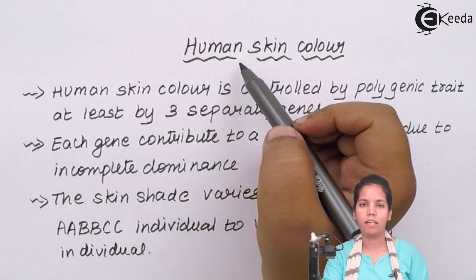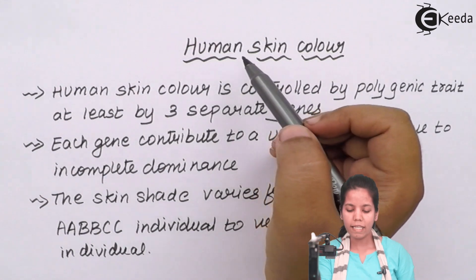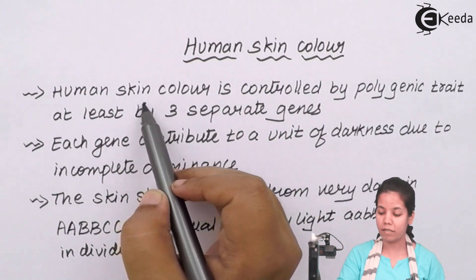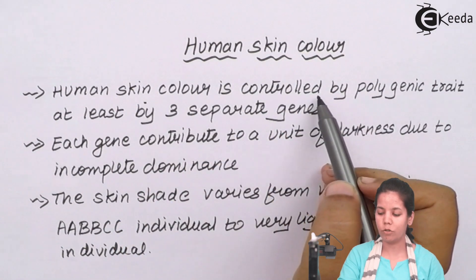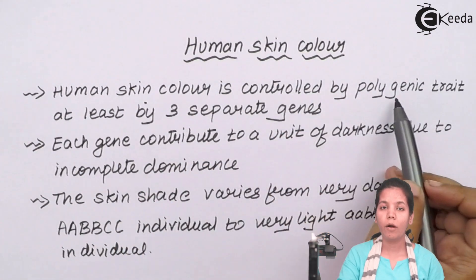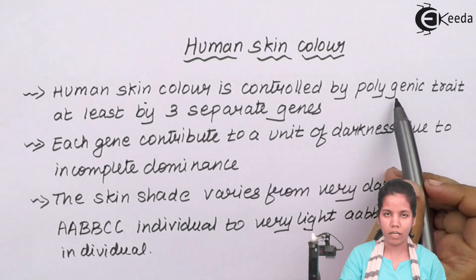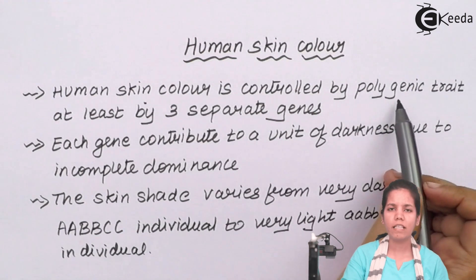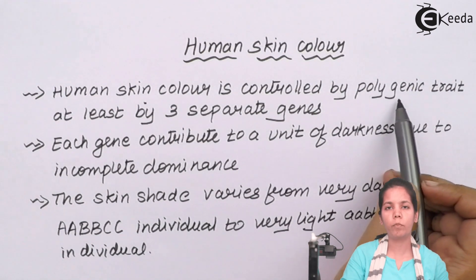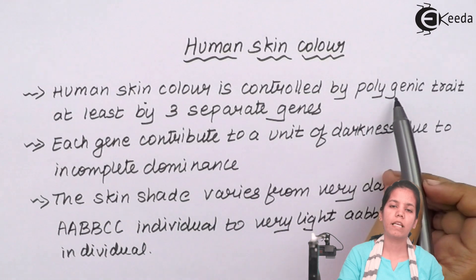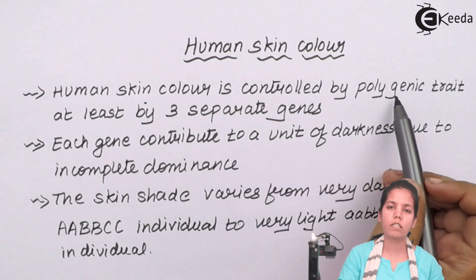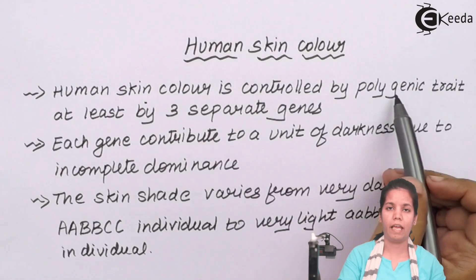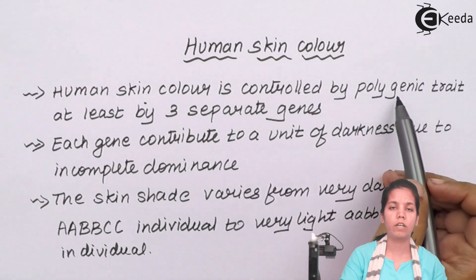Human skin color is basically controlled by a polygenic trait. Polygenic traits are nothing but a group of genes, or you can say a set of genes, which decide a particular characteristic.